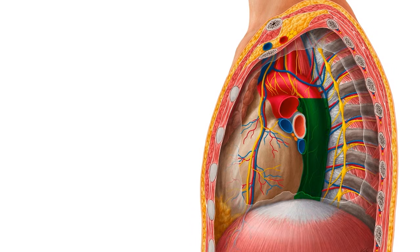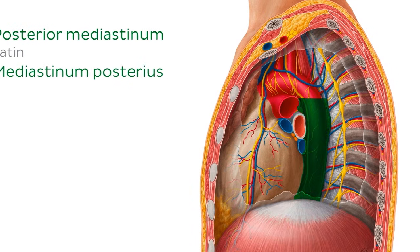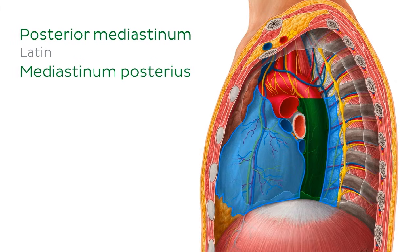And that brings us back to the posterior mediastinum, which is interposed between the pericardial sac and the T5 to T12 vertebral bodies. And although the posterior mediastinum is smaller than the middle mediastinum, it contains quite a lot of anatomical structures, which we're going to find a little bit more about right now.